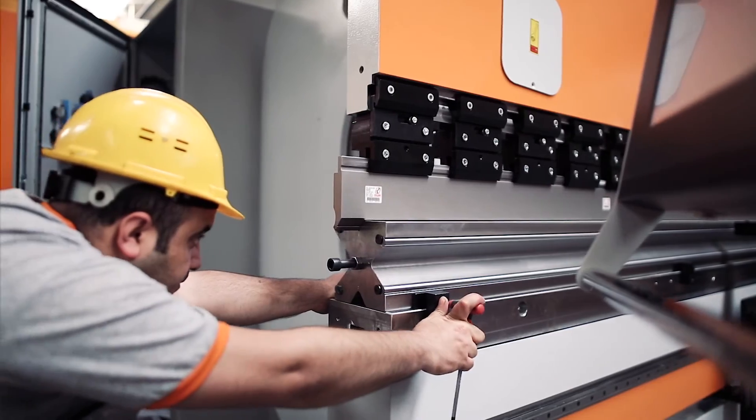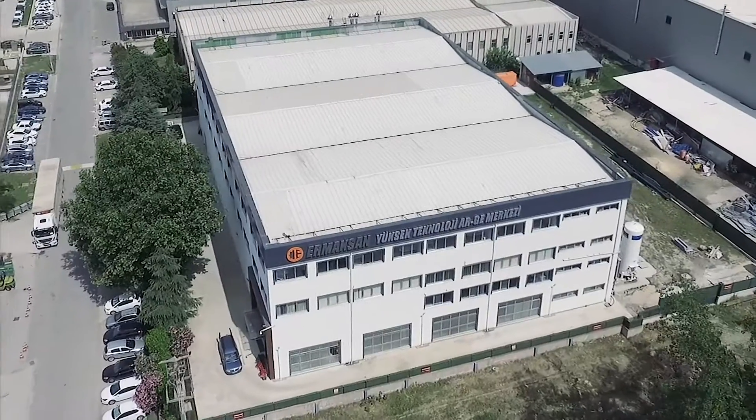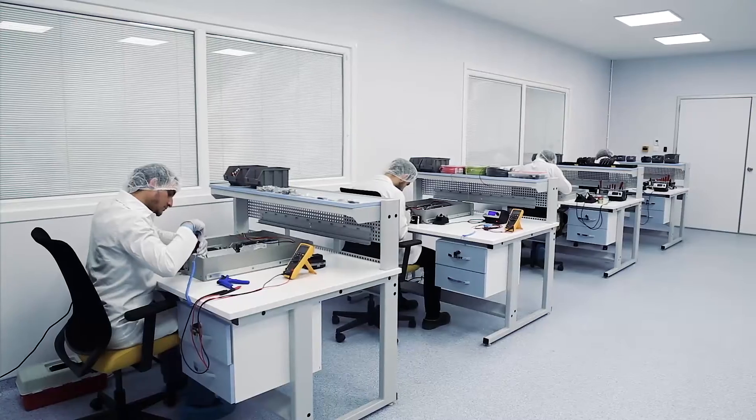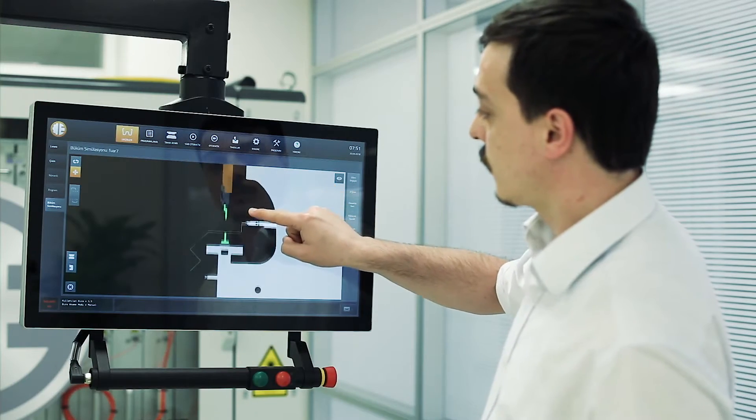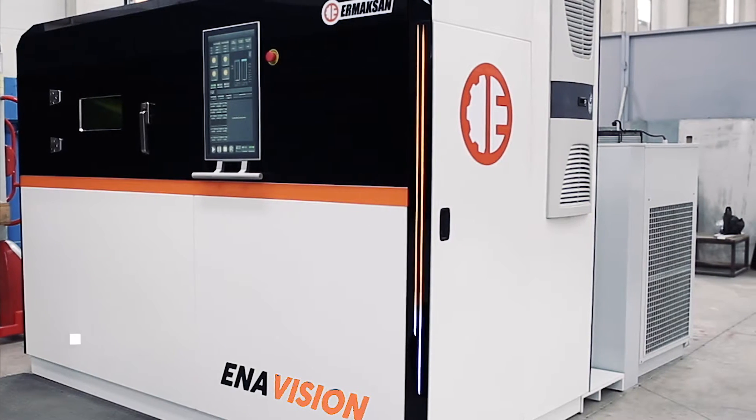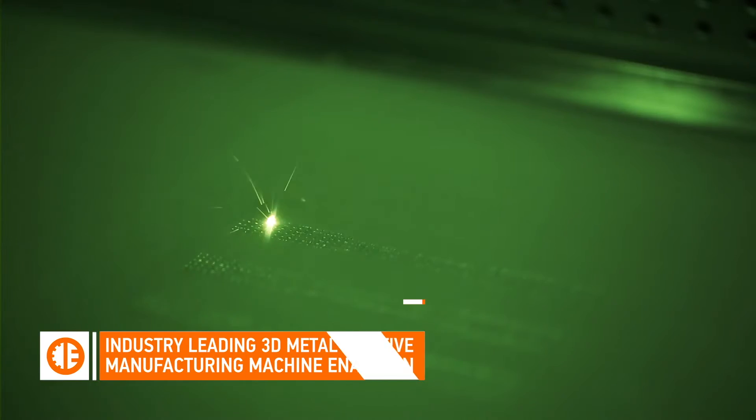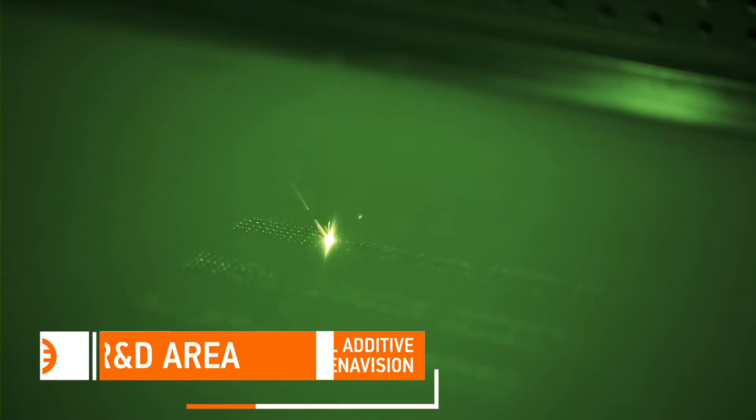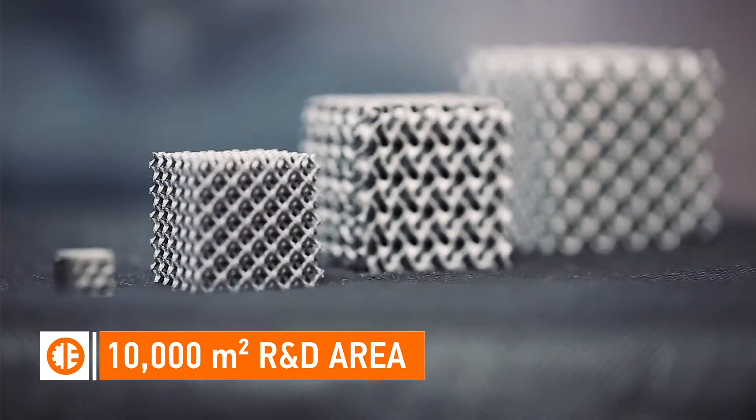Ermexon continues its R&D studies for the future such as fiber laser technologies, new machine models, industry 4.0 applications, and 3D printer machines in its R&D center with an area of 10,000 square meters.